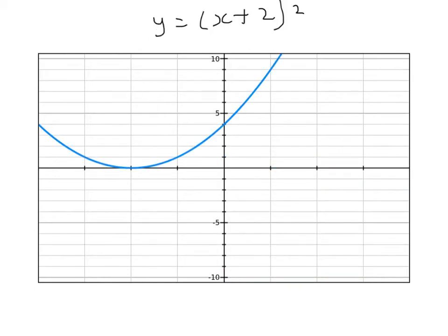And so when we put an x plus 2 inside a bracket, the whole graph of y equals x squared shifts two places to the left. Again a little bit surprising, but the plus 2 inside the bracket shifts it two places to the left towards the minus numbers. So in some ways it's the opposite of what you might expect.